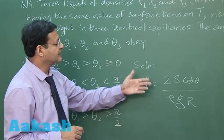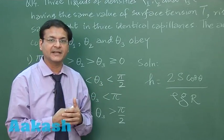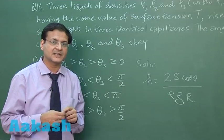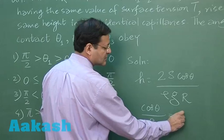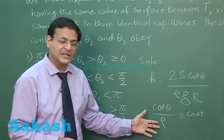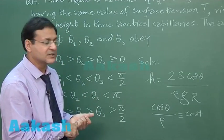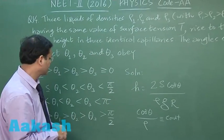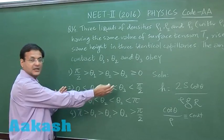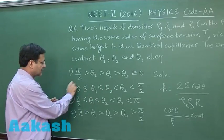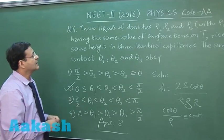Here, surface tension, height, and radius are all the same, so cosθ/ρ = constant. Since this is a question of rise, the angle of contact will be less than 90°. If ρ is large then cosθ should also be large, meaning θ should be smaller — because a large angle gives a small cosine value. So if ρ₁ is the largest, θ₁ will be minimum, and all angles must be less than π/2. The correct option is: θ₁ < θ₂ < θ₃ with all angles between 0 and π/2. So I am marking answer 2 for question number 14.